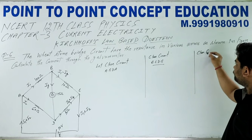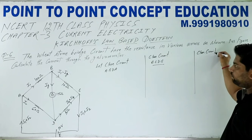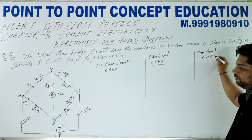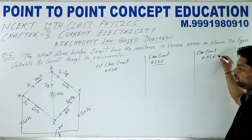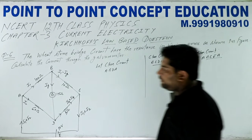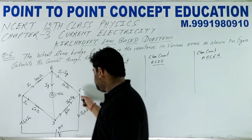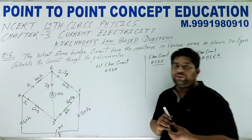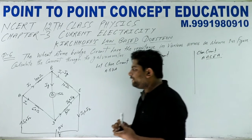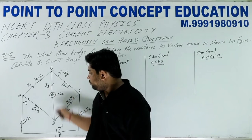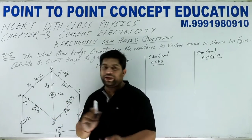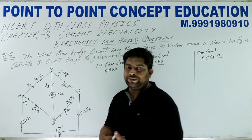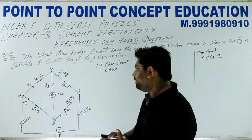तीसरा close circuit: A, B, C, E, A। यहाँ पर आपको यह ध्यान रखना है — इस वाले close circuit ABDA पे कोई battery नहीं है।